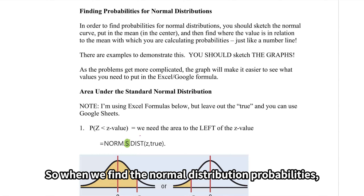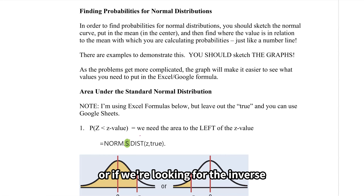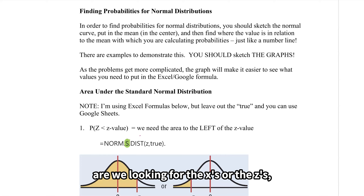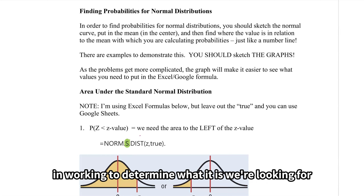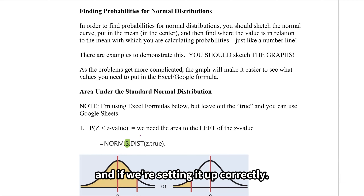So when we find the normal distribution probabilities, or if we're looking for the inverse and we're given the probabilities and looking for the x's or the z's, we're going to sketch these graphs. Sketching the graph is very helpful in determining what we're looking for and checking that we're setting it up correctly.